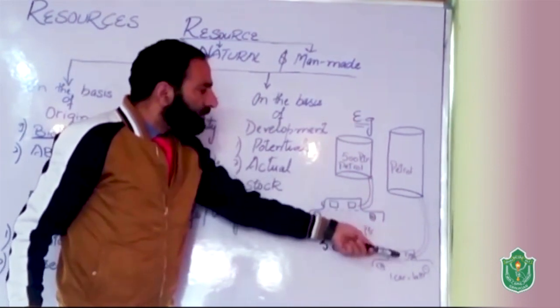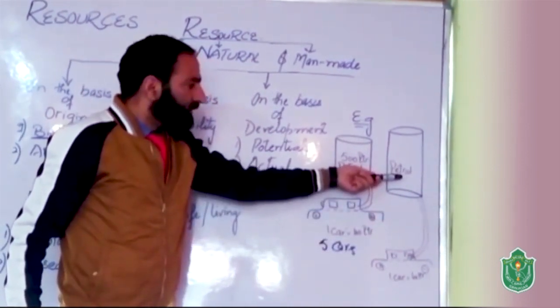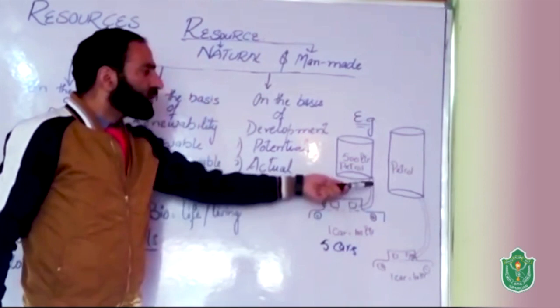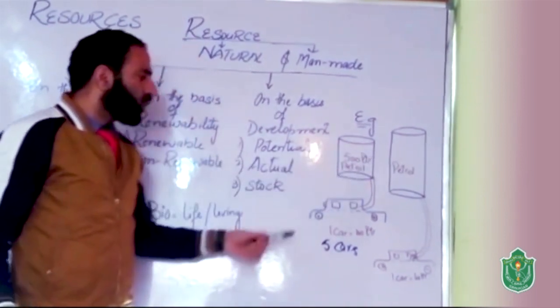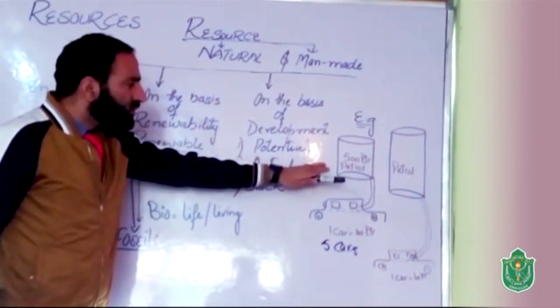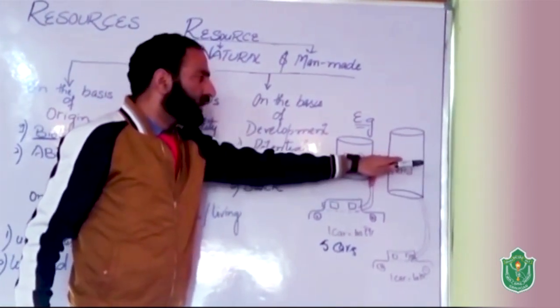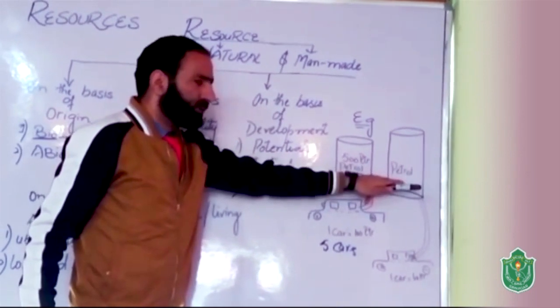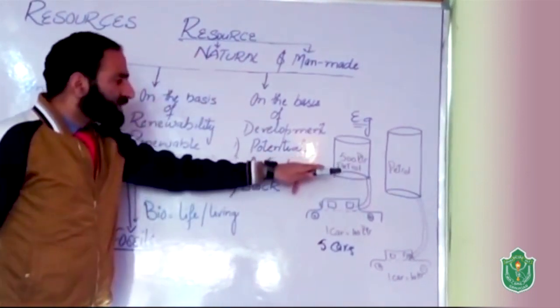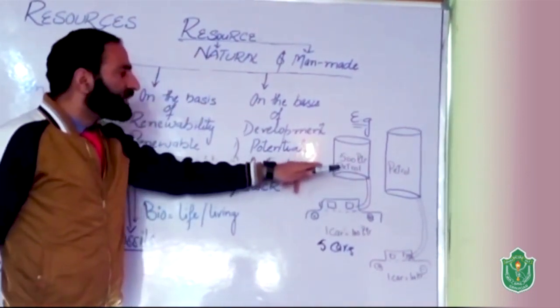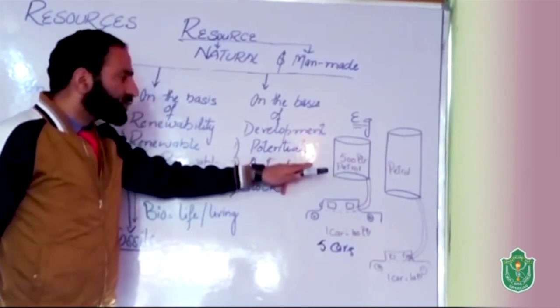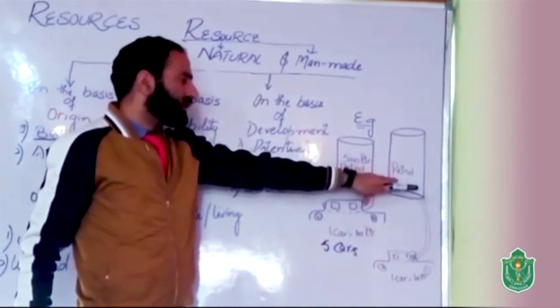How many cars can be filled with this petrol tank? We don't know, because we are not knowing the quantity. So this is the actual resource and this is the potential resource. We are knowing it has petrol, but we are not knowing the quantity. This one, we are knowing the quantity - it is actual resource and this is potential resource.